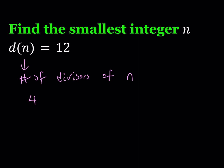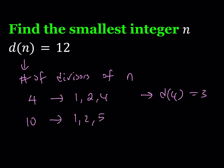Let's look at some examples. How about 4? How many divisors does 4 have? Well, it has 1, 2, and 4, so the answer is 3. d(4) is 3. How about 10? Well, 10 is divisible by 1, 2, 5, and 10, so 10 has 4 divisors. Basically every positive integer can be used with this function and is defined for those numbers.